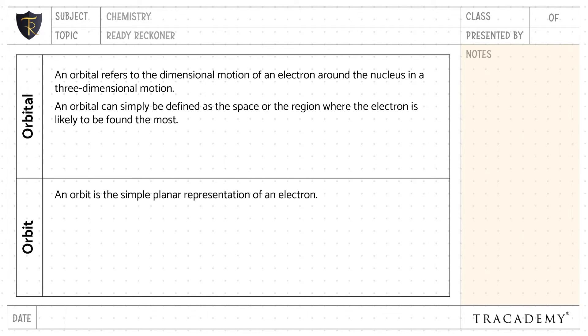An orbital can simply be defined as the space or the region where the electron is likely to be found the most. Whereas, an orbit can be simply defined as the path that gets established by the electron revolving around the nucleus.